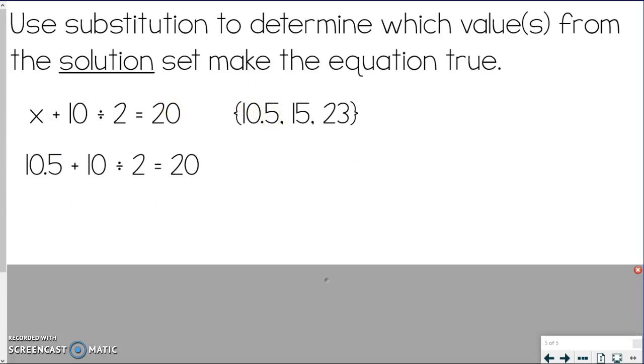We substitute 10.5 in. And don't forget, follow order of operations, or it will absolutely change your answer. Okay? And again, I'm rewriting the whole problem. So I'm going to do the division before addition. So we do 10 divided by 2 first to get 5. So I've got 10.5 plus 5 equals 20. And when I add that up, I get 15.5. And that does not equal 20. So if you want to put a slash through your equals sign, you can. Or you can put no, or an x, or something. But this did not work. So 10.5 is not the solution for this equation. So let's move on to the 15.